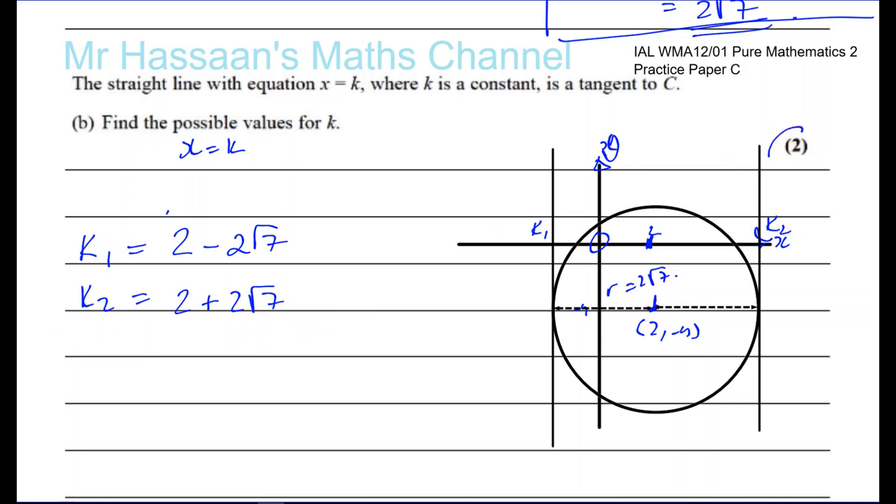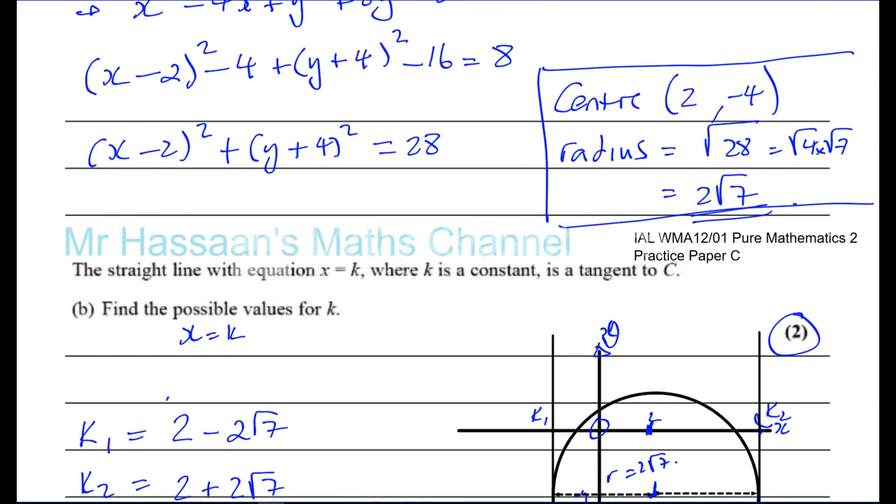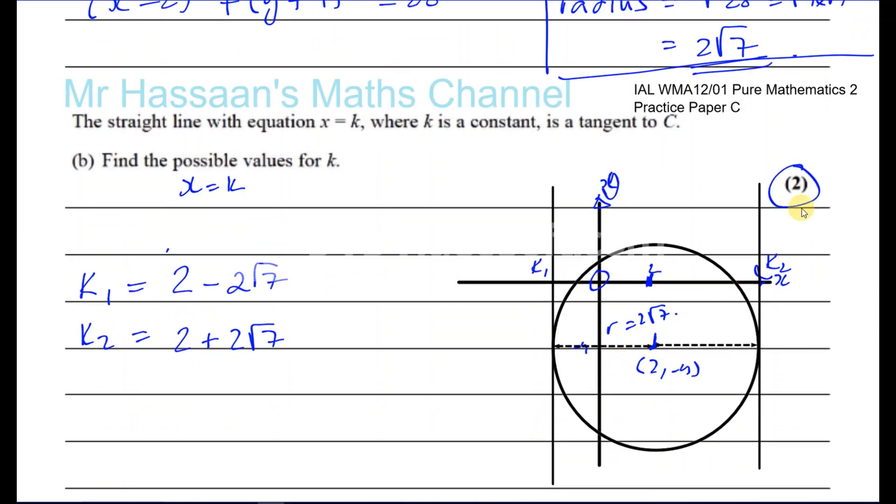You can see it's only worth 2 marks, so it's not something that requires anything more complicated. You could also answer it algebraically by putting x equals k into this equation and rearranging it to make y in terms of y. Then you'll have to basically show that there's only one solution, so you could use the discriminant. There's only one solution to the equation, so you'll have b squared minus 4ac is equal to 0, and you'll end up with a quadratic with k in it, and you'll end up with one value of k is 2 minus 2 root 7, the other one is 2 plus 2 root 7.